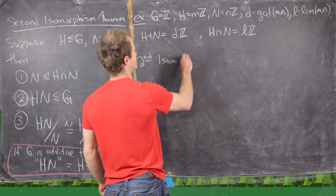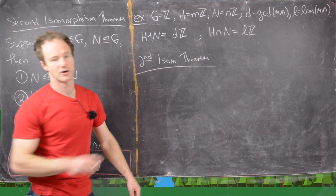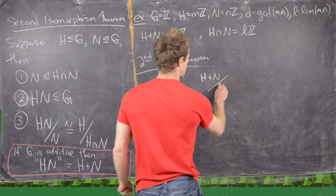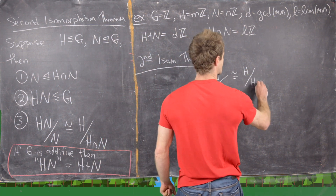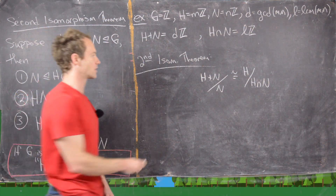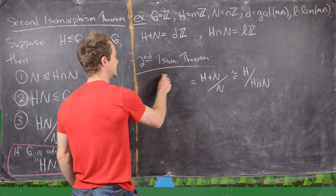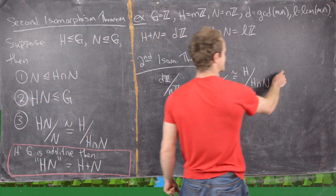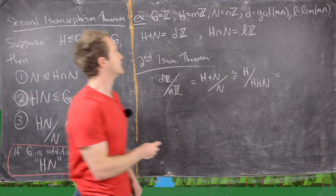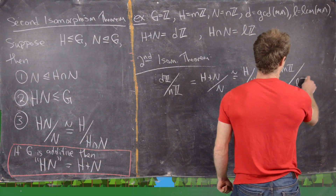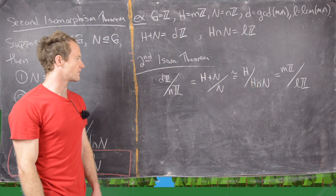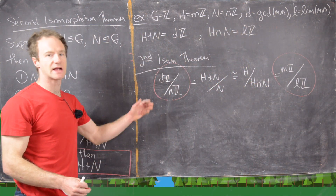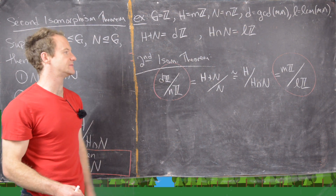Applying the second isomorphism theorem: H plus N mod N is isomorphic to H mod H intersect N. Substituting our subgroups, that becomes Dℤ mod nℤ is isomorphic to mℤ mod Lℤ. Now I want to get a handle on exactly what these groups are on either side of this isomorphism — so Dℤ mod nℤ on the left and mℤ mod Lℤ on the right.